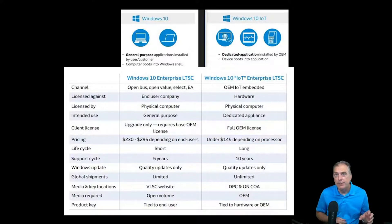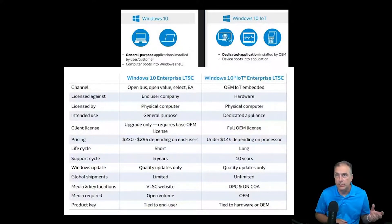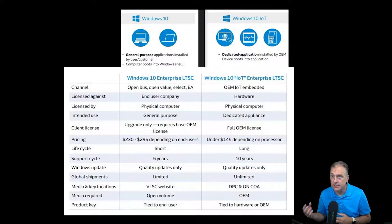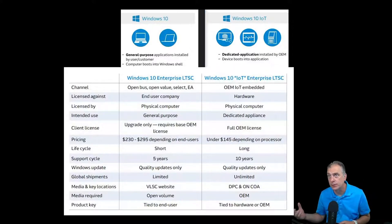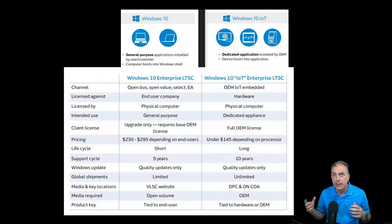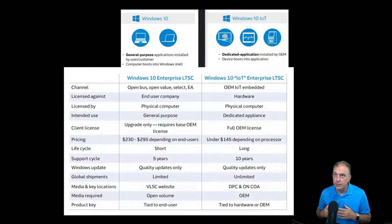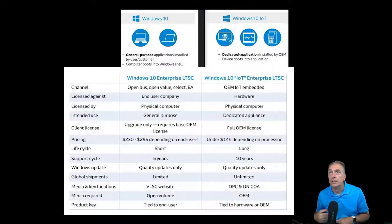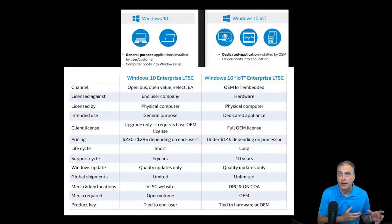Then we've got media and key. For open volume, the media and key are within the volume licensing service center. The OEM IoT is in the device partner center, or when it comes to the key, it's on the COA sticker, or you request it separately. I have other videos that will cover media and keys. The main point to know here is: if you're building an appliance, make sure you're using the IoT version, and if you're building a general purpose box, use the non-IoT version.